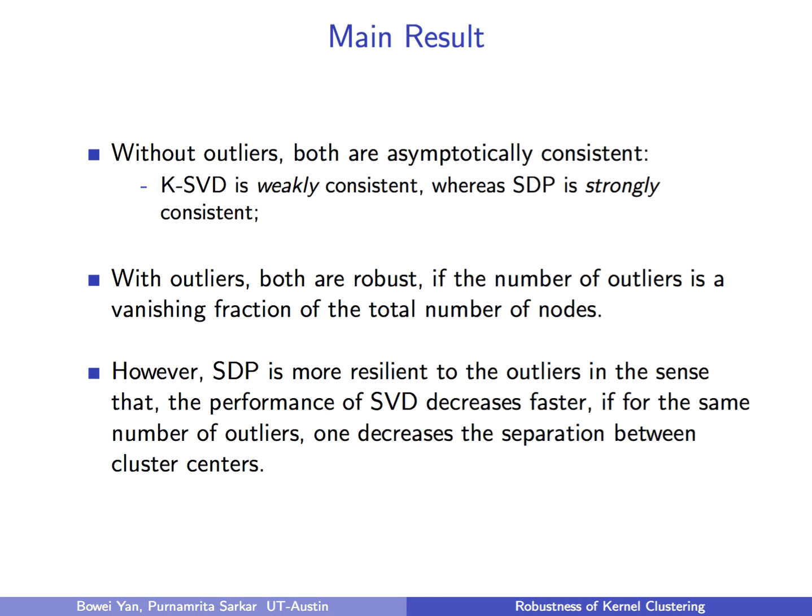To be concrete, we show that without outliers, kernel SVD is weakly consistent, where the fraction of misclassified nodes vanishes with high probability, whereas SDP is strongly consistent, where the number of misclassified nodes vanishes with high probability. We also prove that both methods are robust to arbitrary outliers as long as the number of outliers grows at a slower rate than the number of nodes.